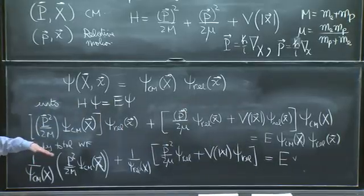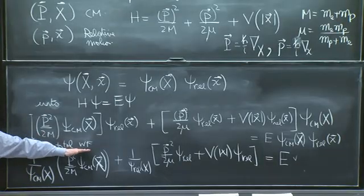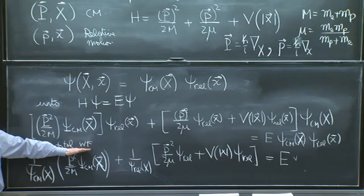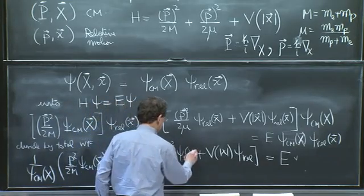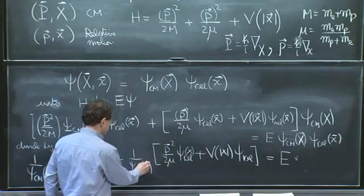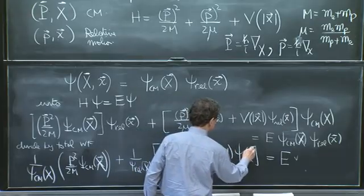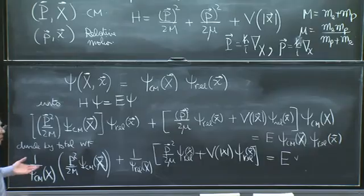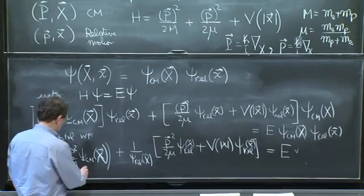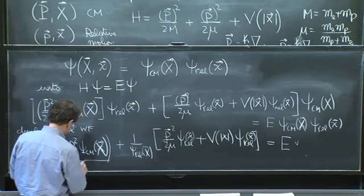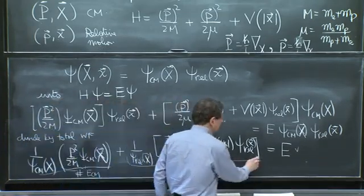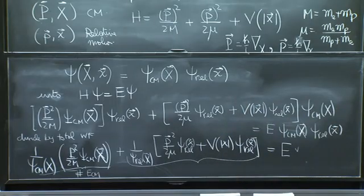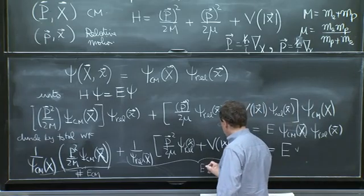So we have a situation where a number is the sum of two functions. Now what is funny is the argument you've heard several times. This first term depends just on the capital X coordinates. The second term depends just on the lower x coordinates, small x coordinates. Therefore, the only way these two things can always be true is if the first term is a number, and we'll call it E_CM. And the second term should be another number, and I'll call it E_relative.